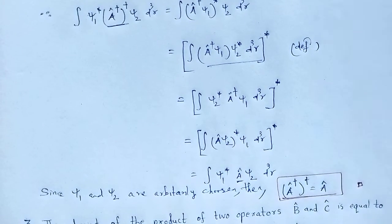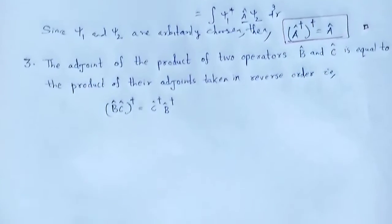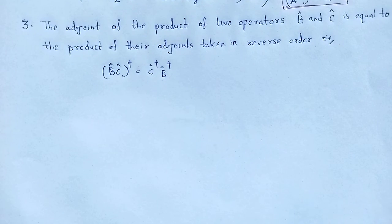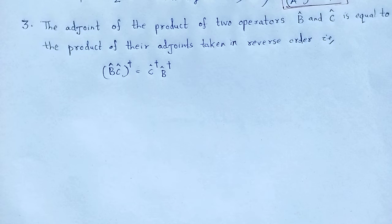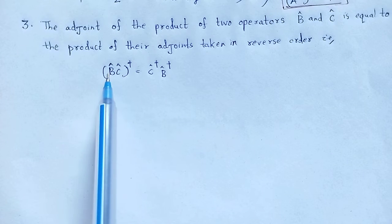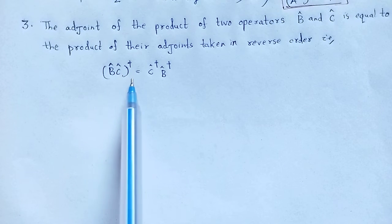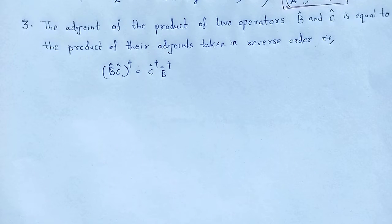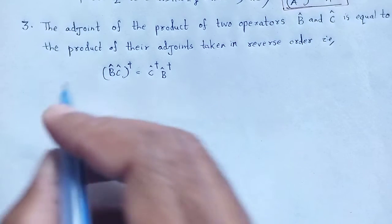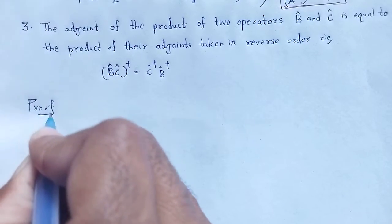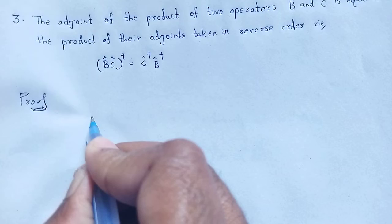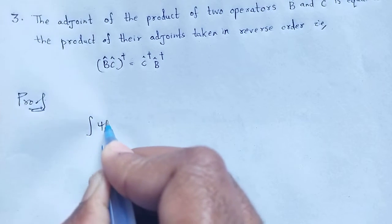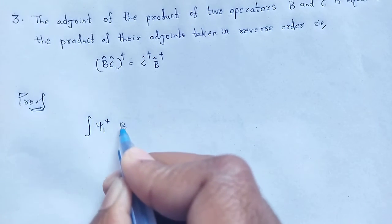Property number three: the adjoint of the product of two operators. Let two operators be B-cap and C-cap. Then the product of their adjoints taken in reverse order — that is, B-cap C-cap-dagger — is equal to C-cap-dagger times B-cap-dagger.